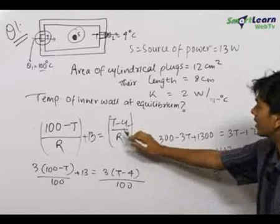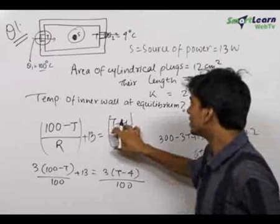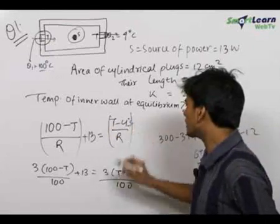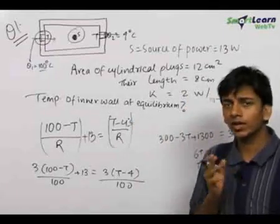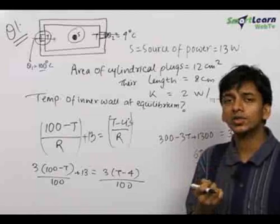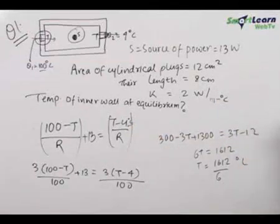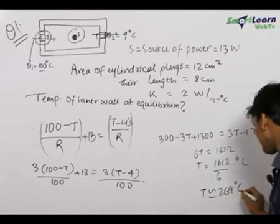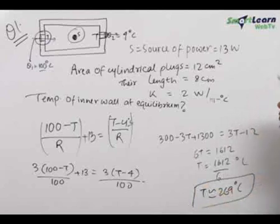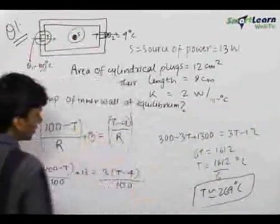This temperature is in degrees Celsius, because we are writing the difference in temperature and we used degrees Celsius in our setup. Whenever there is a difference in temperature, you can write it in Celsius or Kelvin. We wrote it in degrees Celsius, so we get the final answer in degrees Celsius. T approximately comes out to be 269 degrees Celsius. So the final temperature of the inner walls at thermal equilibrium is 269 degrees Celsius.